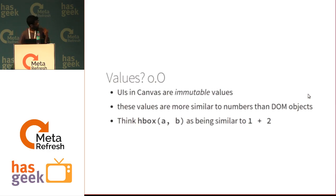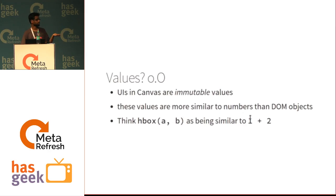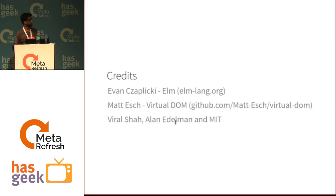The title of the talk is UIs as Values. By values I mean immutable values. I like the word values because it does not bring in the same mindset as when I say objects. These values are more similar to numbers than to DOM objects. For example, if you say HBox A, B, you're getting a new value — a new UI value — and A and B do not change, just as 1 plus 2 results in a new number and 1 and 2 don't change. But in actual JavaScript, you cannot be sure that A and B will not get modified by the HBox function, leading to unpredictable behavior.